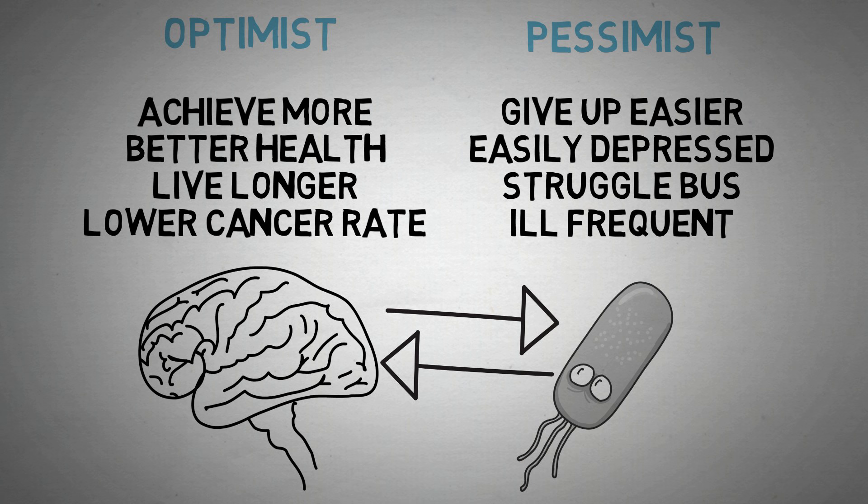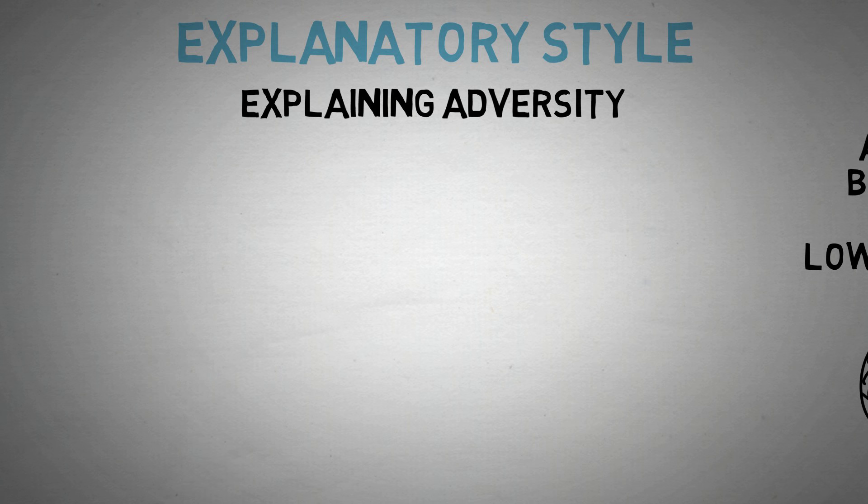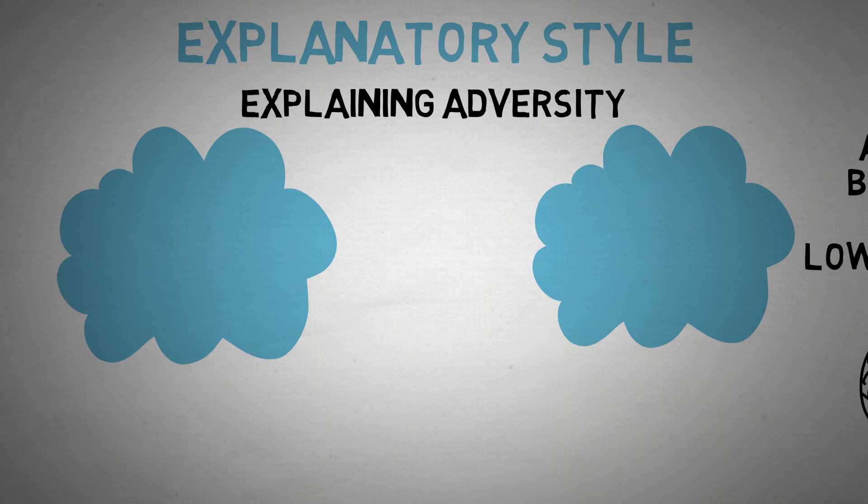And to find out what causes pessimism, we look at someone's explanatory style. And this is how they explain a situation when something goes wrong, when there is an adversity, when something bad happens.